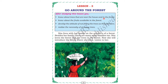Today I'll show you Lesson Number 3: 'Go Around the Forest.' After studying this lesson, we will learn about the trees that are near the house and in the forest, know about the fruits available in the forest, and develop the attitude of not felling trees. We will also realize the necessity of growing trees. Let's see this small story.